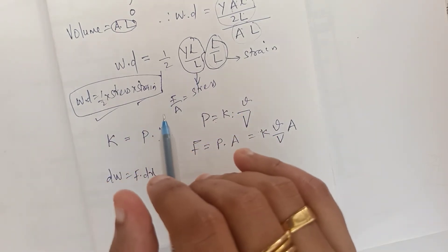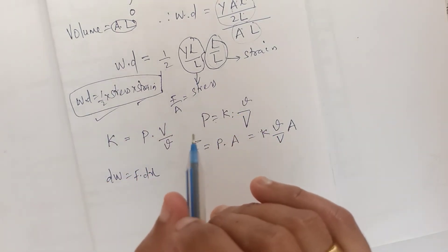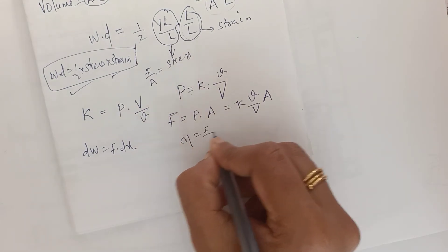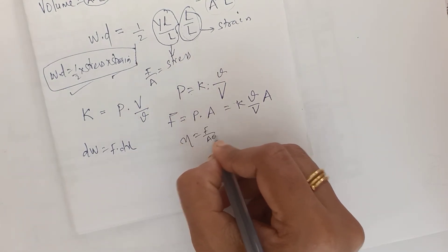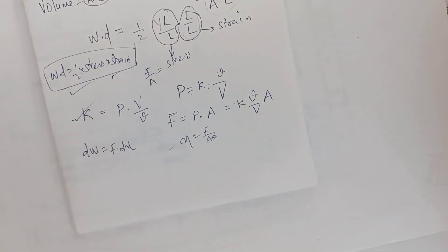In the case of shearing strain, we consider the shear modulus η = F / (A·θ). Similarly, solving and integrating, you will finally get that work done equals half stress times strain — the same formula holds.